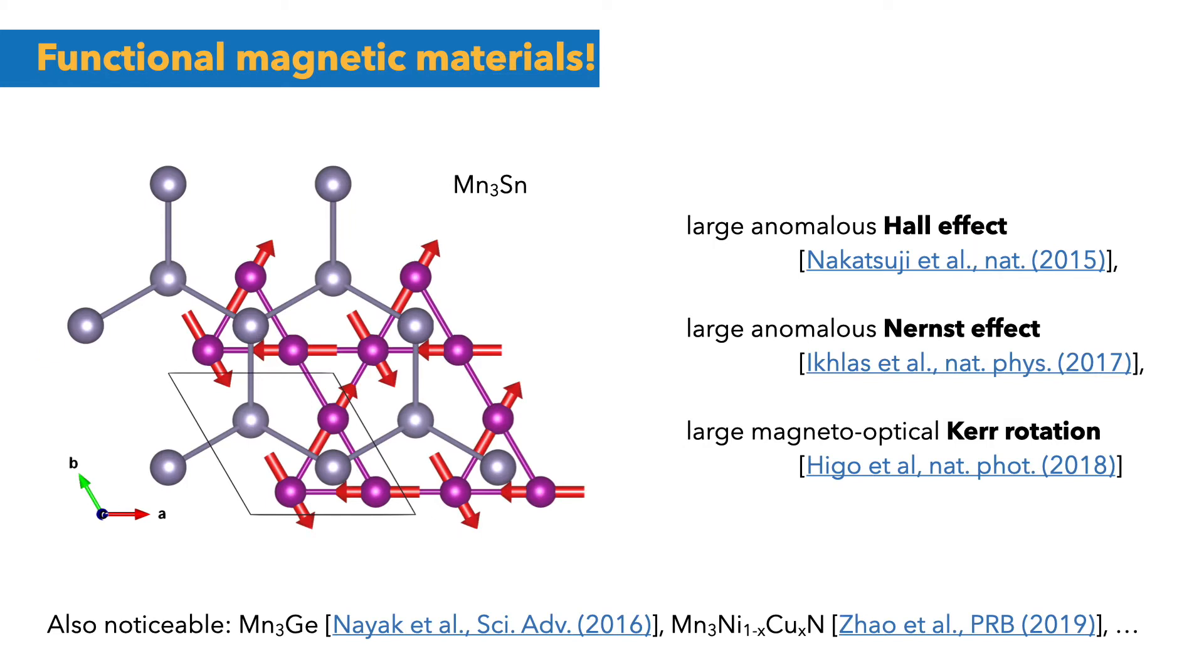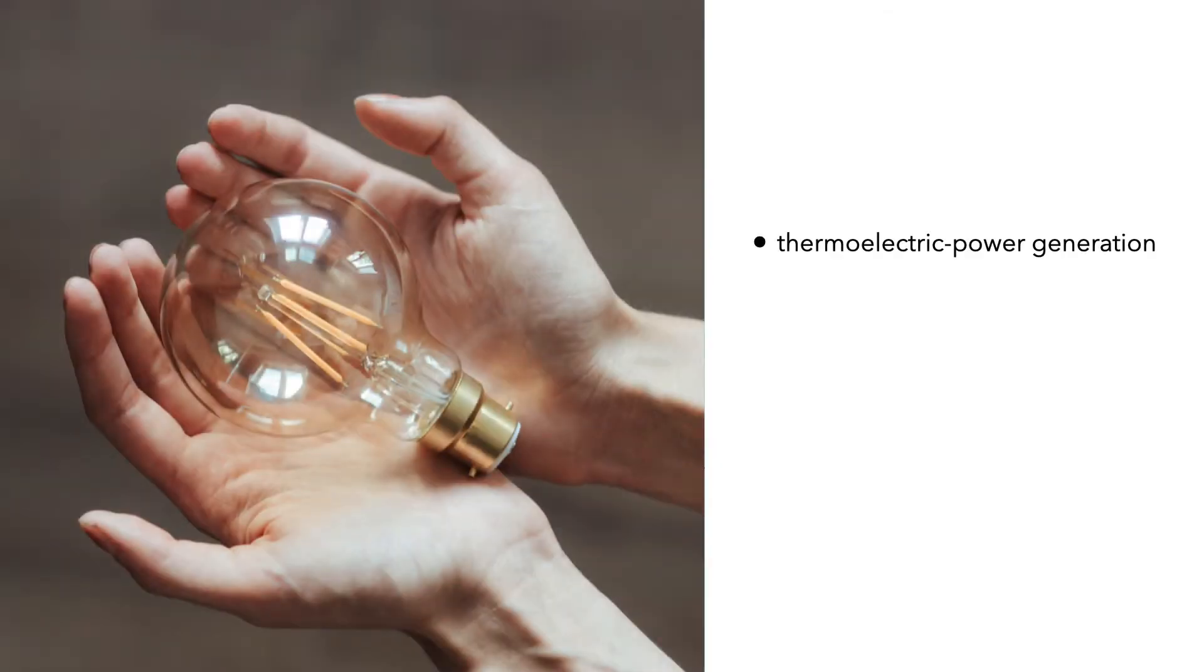One material that has attracted attention due to its magnetic order is manganese tin, which shows several large anomalous effects. Such magnets may find promising applications in our lives. For instance, a material with a large anomalous Nernst effect can be used to generate electric power due to a heat difference and thus serve as a green energy source.